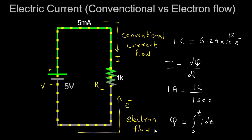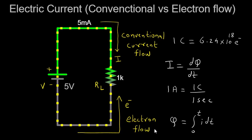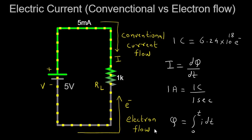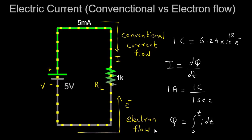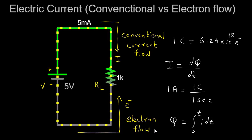Later, when scientists started investigating electric circuits, they observed that the flow of current in conductive materials followed a specific direction. At that time, they did not know about the existence of electrons. Hence, they made the assumption that current was composed of positive charges moving from the positive terminal to the negative terminal. This convention became known as conventional current.